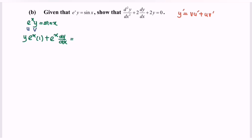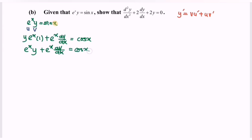This equals the differentiation of sin(x), which gives cos(x). Then rewrite the situation: e^x·y plus e^x·(dy/dx) equals cos(x).